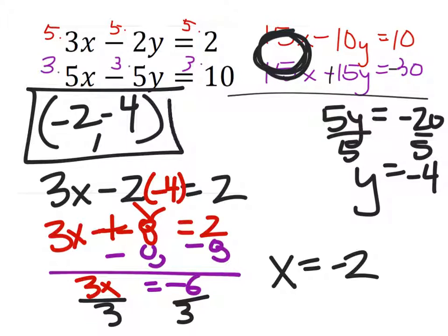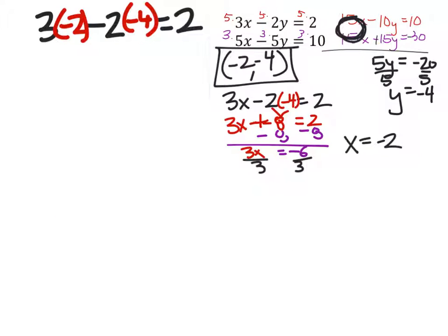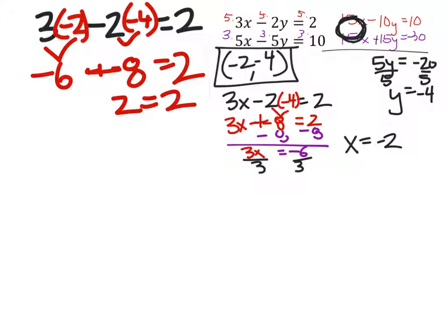Now, this is the answer, but if you guys were taking the test, make sure you check these x and y values in both of the equations to make sure it's correct. Let's check using the first equation. 3 times negative 2 is negative 6. Minus 2 times negative 4 is negative 8. So, that's negative 6 plus 8 is 2. And, 2 does equal 2. That's true.